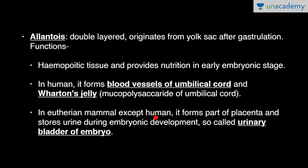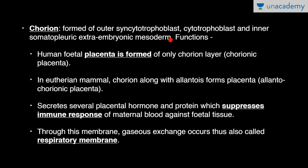Allantois is basically excretory in function and in eutherian mammals it forms part of the allantochorionic placenta. Chorion is formed of outer syncytotrophoblast, cytotrophoblast and inner somatopleuric extra-embryonic mesoderm — so three layers, unlike the double-layered other membranes. Human fetal placenta is formed only of the chorion layer — chorionic placenta — while in eutherian mammals, chorion along with allantois forms an allantochorionic placenta. Chorion secretes placental hormones and proteins which suppress the immune response of maternal blood against fetal tissue, and gaseous exchange occurs through this membrane, so it is also called the respiratory membrane.